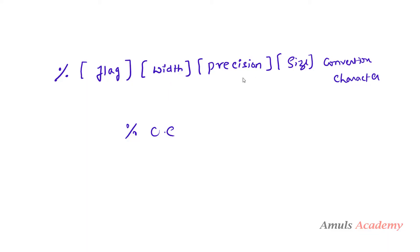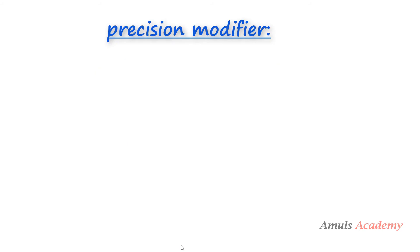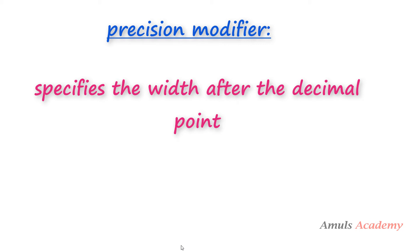Next we'll talk about the precision modifier. To specify the width after the decimal point we use the precision modifier. Like %10f means the number is at least 10 characters wide, but to change the digits after the decimal point we use precision, like .3 or .4. The difference is: in the width modifier, if we mention less than required width it won't affect output, but with the precision modifier, if we want only 2 digits after the decimal point, we will get exactly 2 digits.